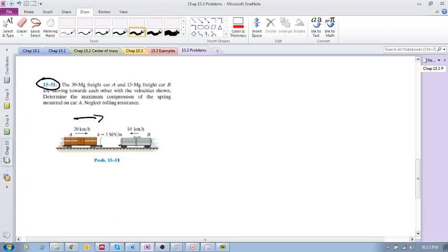And what you notice here is that there is this spring. Obviously it's to help when they impact one another to reduce the impact. Now what is the question? The question is: determine the maximum compression of the spring mounted on car A. Neglect rolling resistance.